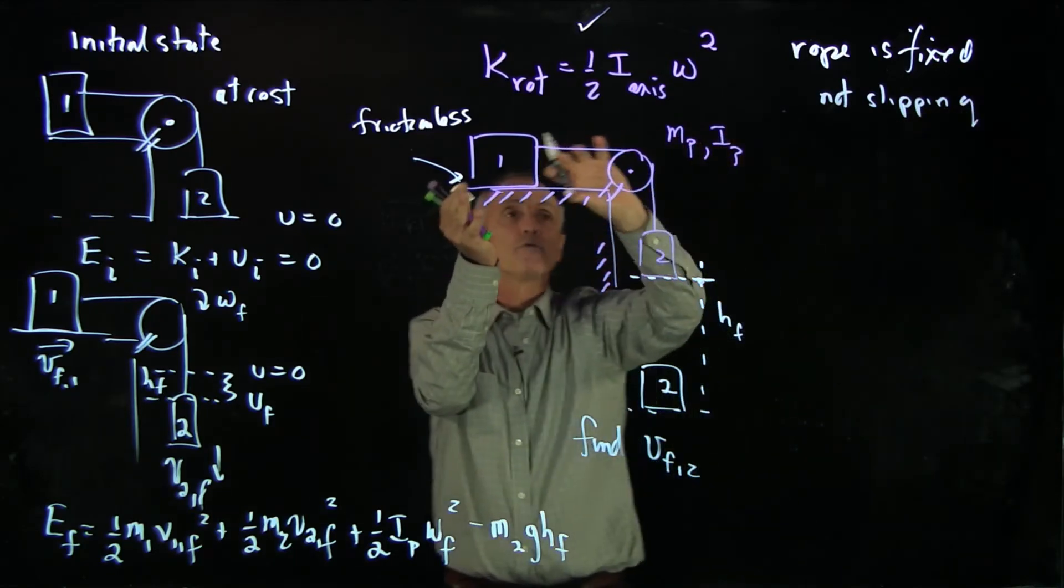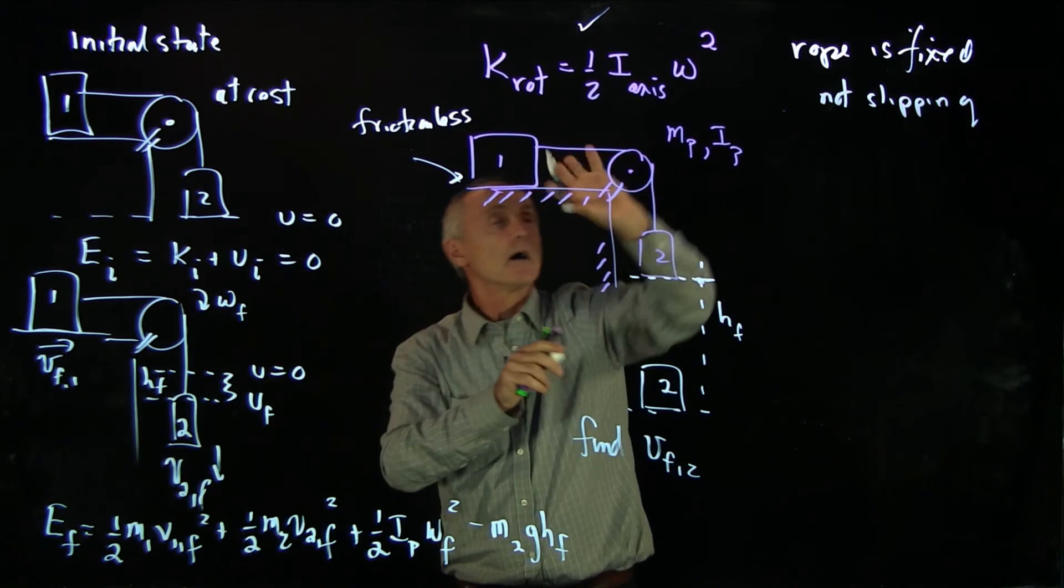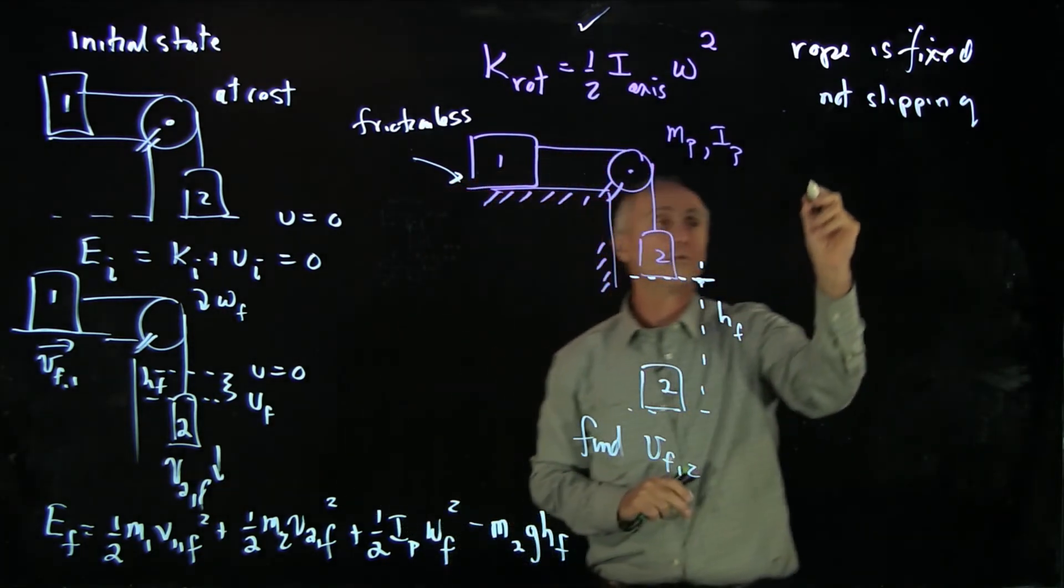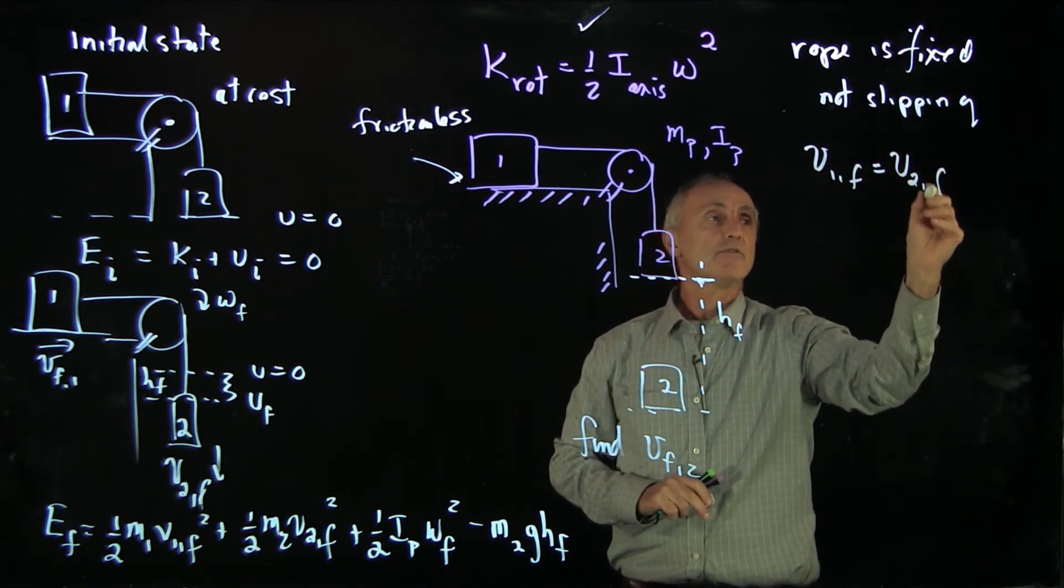What we'll have is fixed and not slipping. So as the rope moves around the pulley, the pulley is moving with the same motion as the rope, and the rope is moving with the speeds of block 1 and 2. So we see that v 1 final is equal to v 2 final.